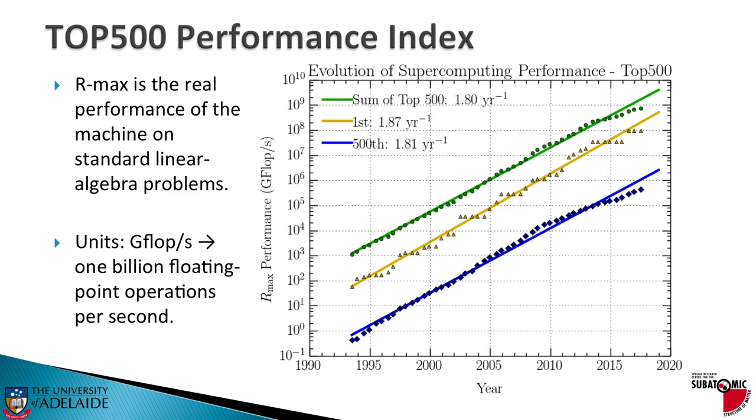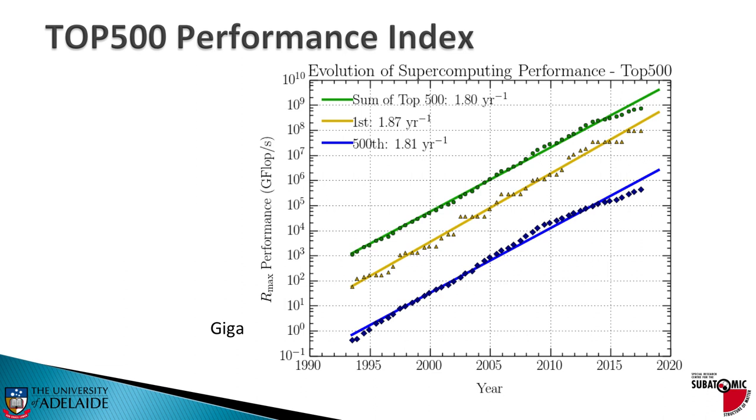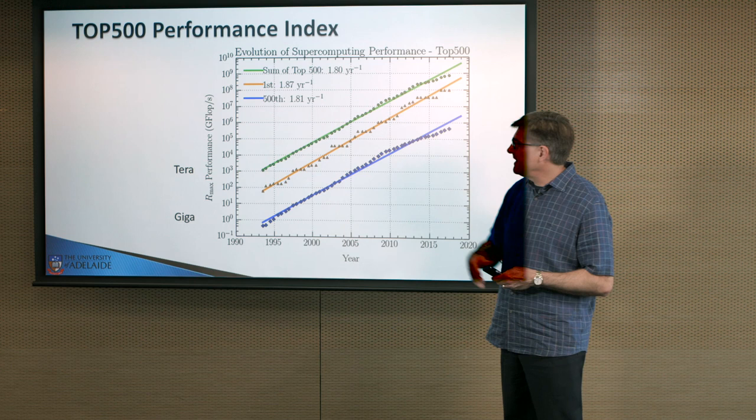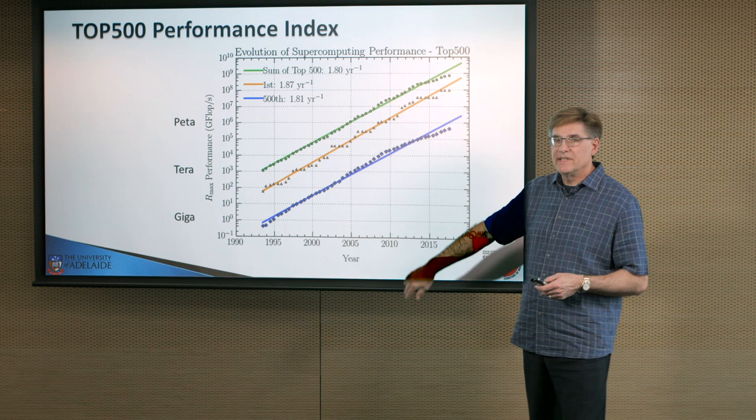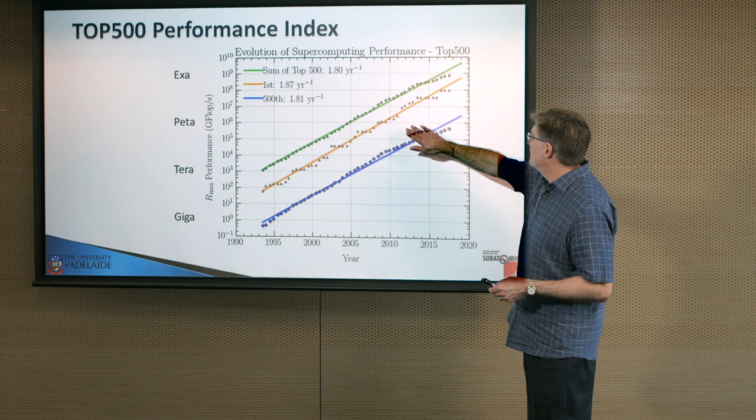Now, as time has passed, we started in the gigascale era. Very quickly, we were up to the terascale area here in the late 1990s. Then we hit the petascale. Here's the top computer, the first in the list, hitting petascales back here around 2010. And, of course, the next scale is the exascale. And you can see that we should be looking at exascale in 2020.